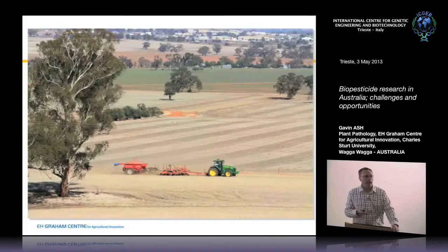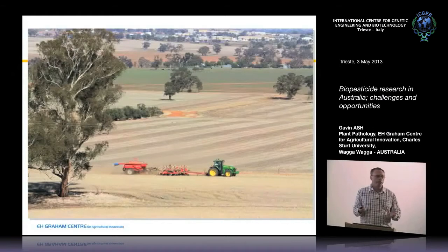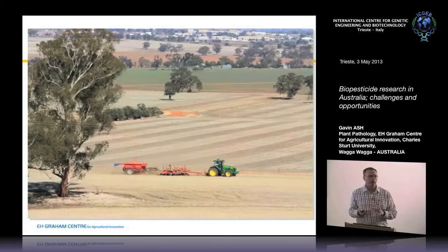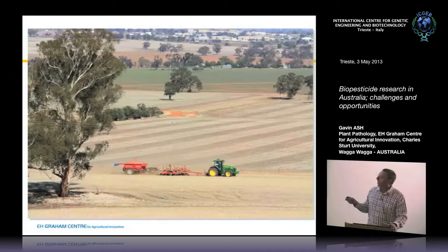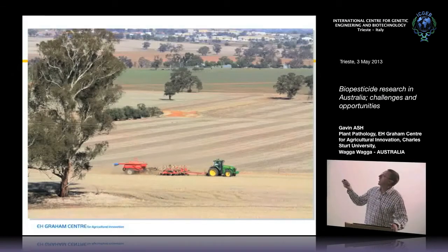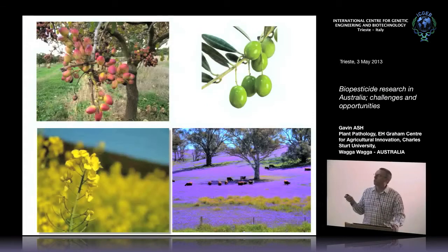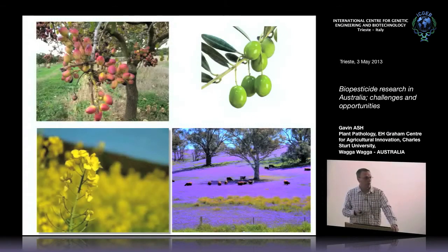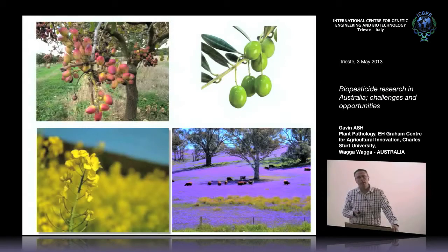Wagga is on the edge of one of the major food-producing regions in Australia. We produce enough food for 60 million people, but we only have 23 million people, so we export a lot of food around the world. A lot of it is broad-acre agriculture — fairly flat landscape with gum trees. In addition, we also produce pistachios, olives — very big olive production now — and canola or rapeseed is becoming very important as a rotation with wheat.